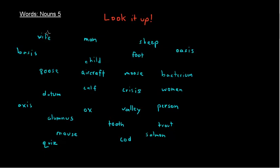Here's one pattern: when we have an F in the last place or the second to last letter, we very often change that F to a V and add the S. So we end up one way or another with VES. Wives, calves. But that's not strong enough to become a rule because the word roof — R-O-O-F — becomes roofs, R-O-O-F-S. It's regular. Just add an S and you're okay.